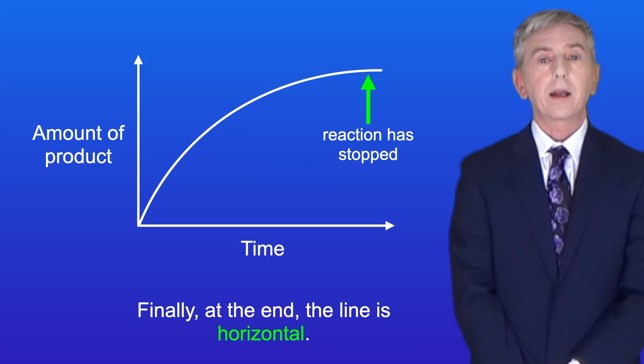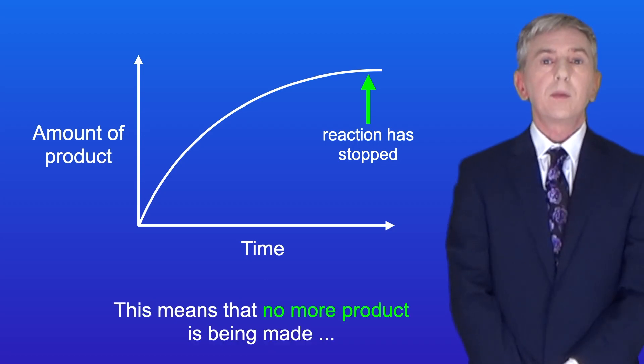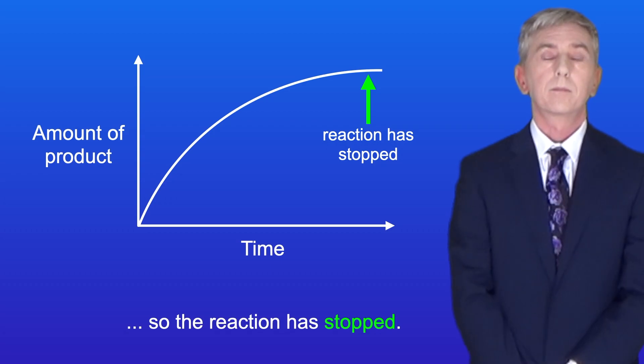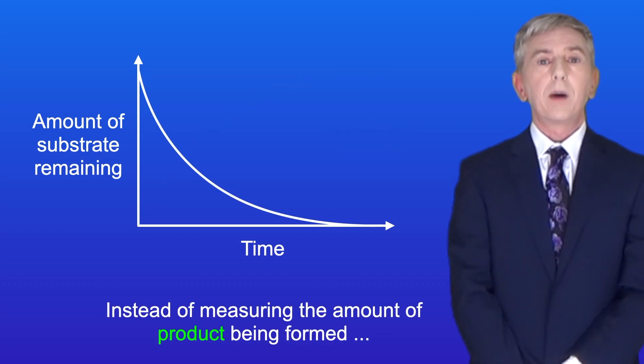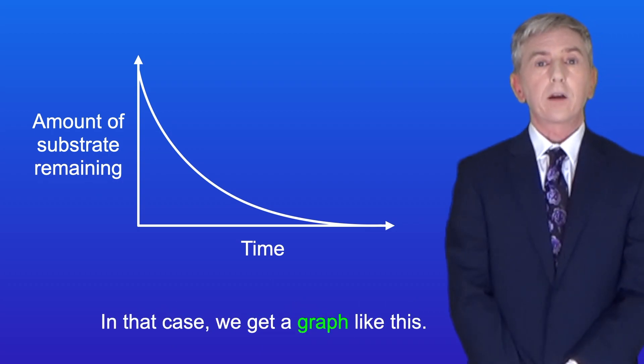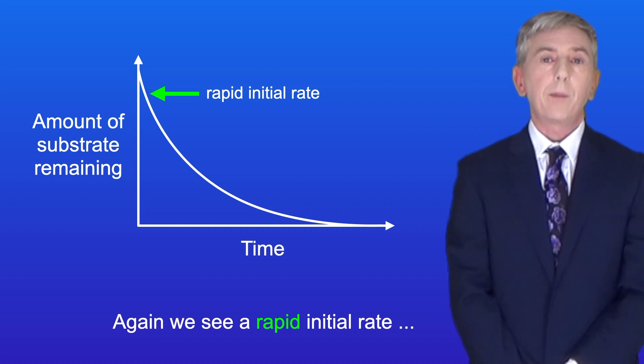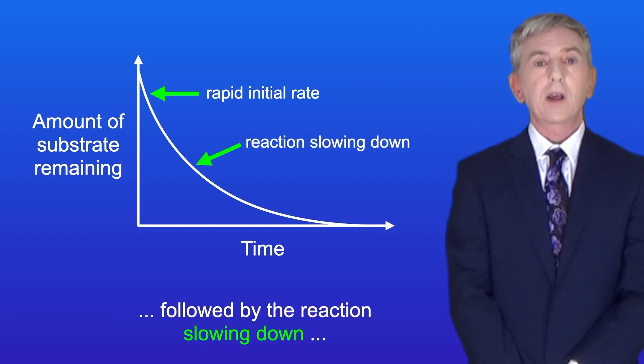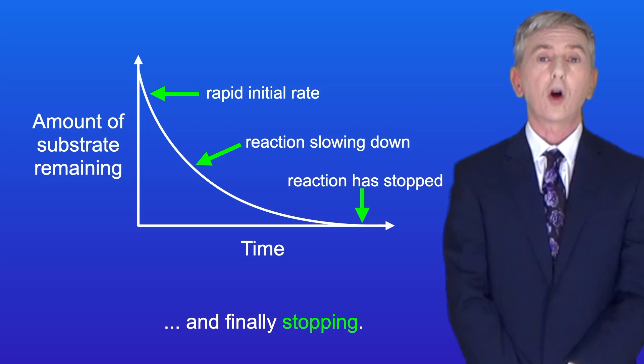Finally at the end the line is horizontal. This means that no more product is being made, so the reaction is stopped. Now instead of measuring the amount of product being formed, we can measure the amount of substrate remaining. In that case we get a graph like this. Again we see a rapid initial rate, followed by the reaction slowing down and finally stopping.